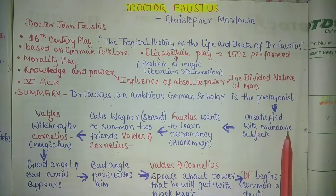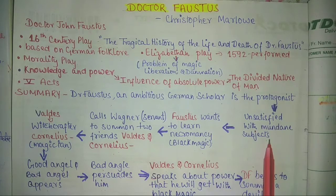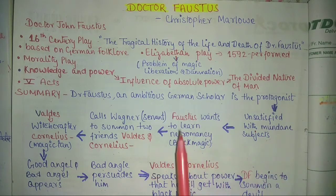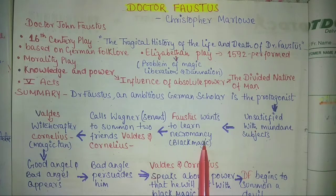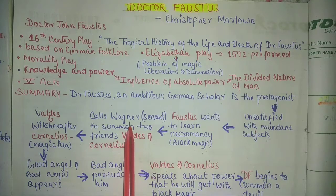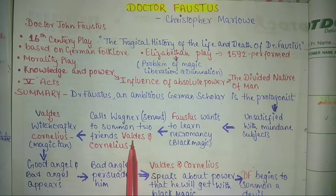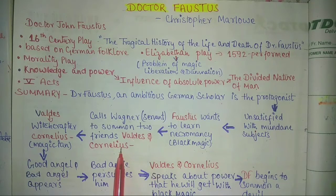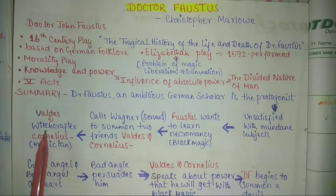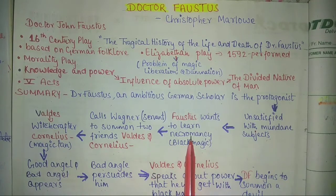He did not get satisfied with theology, law, science, etc. Now he wants to do something extra. Necromancy was something he had not tried yet, so Dr. Faustus wants to learn necromancy or black magic. For that purpose he calls his servant Wagner, and instructs him to summon his two best friends, Valdes and Cornelius — because Valdes was a witchcrafter and Cornelius was a magician. He wanted to learn from them about necromancy.